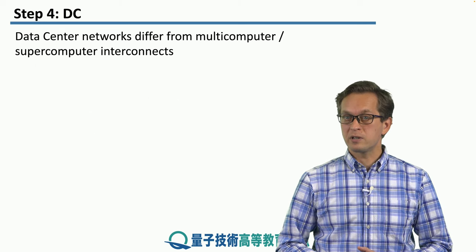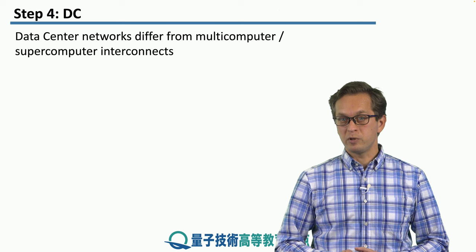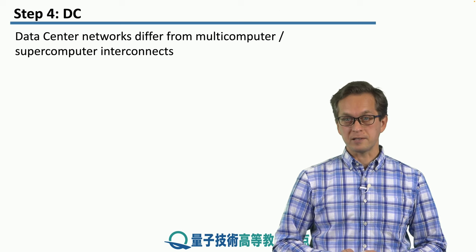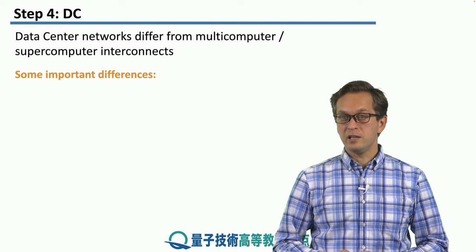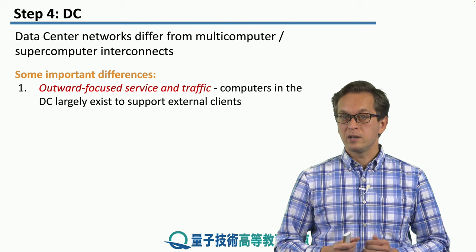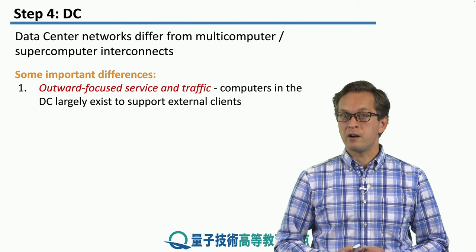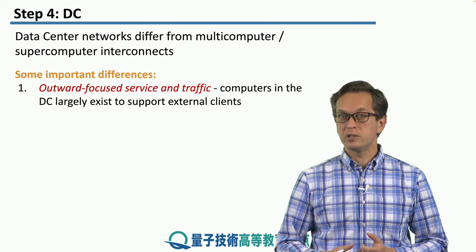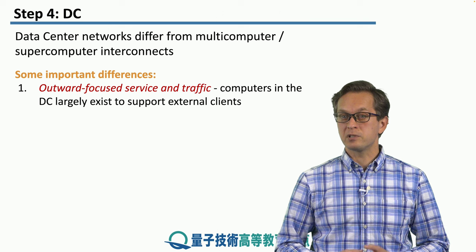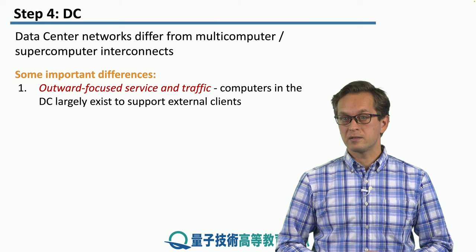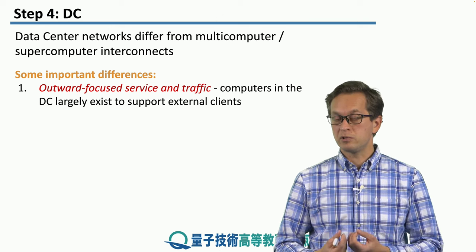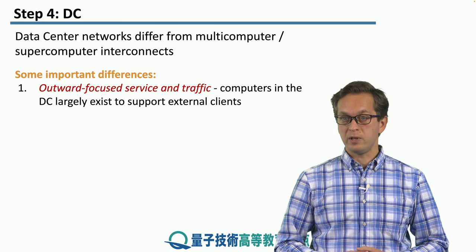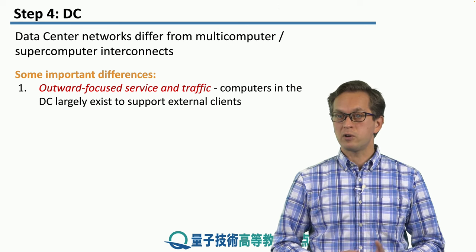Data center networks are different from multi-computer or supercomputer interconnects that we talked about in step 3 of this lesson. The key differences are the following. Quantum data center networks are outward-focused in service and traffic — the computers in a data center largely exist to support external clients, either to store their quantum data using the storage capabilities of a quantum data center, or to run their quantum computations.